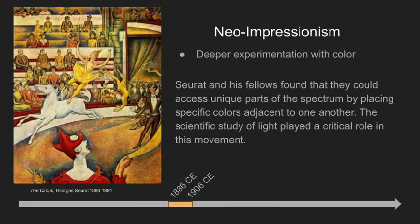Neo-impressionism is a later period movement marked by more experimentation with colors and the manipulation of light. Similar to the impressionists, the capture of intriguing or exciting moments would return to the forefront. George Seurat, their leader, based his technique on exploiting the color theories of Michel Chevreul, who determined that colors do not change, but their visual sensations do.